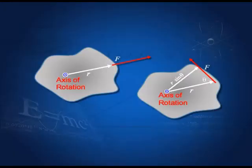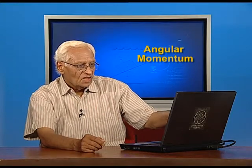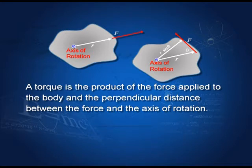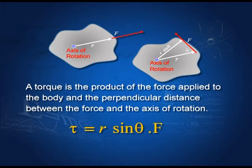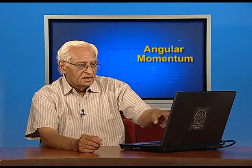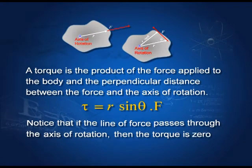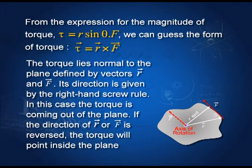Let us see what torque is. Here is a rigid body rotating about an axis of rotation outside the plane of the screen. F is the force acting at a point at distance r from the axis of rotation; the angle between r and F is θ. The perpendicular distance between the force and the axis of rotation is r sinθ. Therefore, torque is defined as the product of that perpendicular distance and the force F — so torque is r sinθ times F. If F is in the same line as r, then the torque is zero because the cross product of r and F is zero.